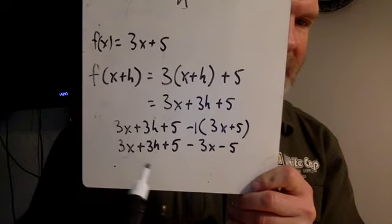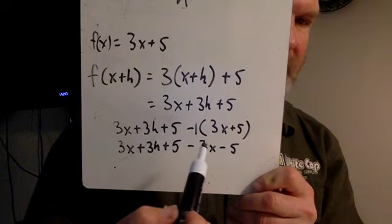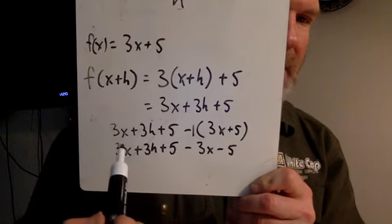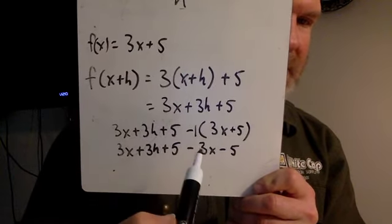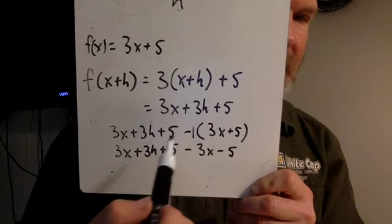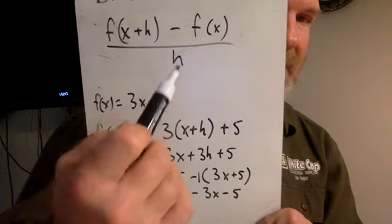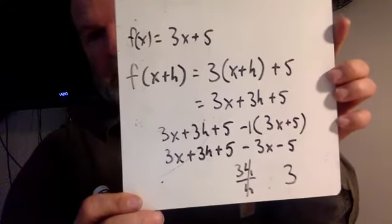Now you can combine your like terms, and it'll be kind of nice because the 3x and the 5s are going to cancel out. 3x minus 3x is 0. 5 minus a negative 5 makes 0. All you're going to be left with is a 3h in the numerator. And don't forget the denominator was a single h. So basically what we have here is 3h over h. And then the h's cancel out. So this really reduced down pretty far to just a regular old 3.